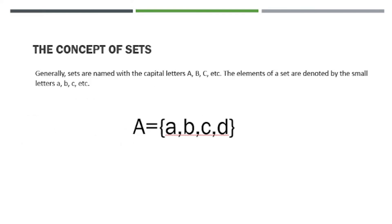The next concept of a set: generally, a set is named with a capital letter. From this example, the name of this set is letter A. So the name of this set ABCD is A. Capital letters are the names of our sets. The elements of a set are denoted by small letters. What's inside the brackets are called elements: A is an element, B is an element, C is an element, and D is an element. The elements of a set are separated by a comma.